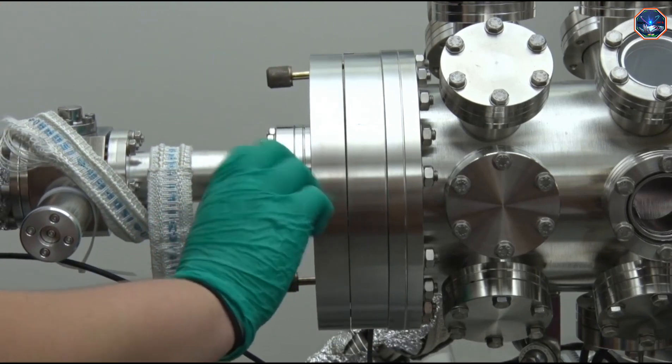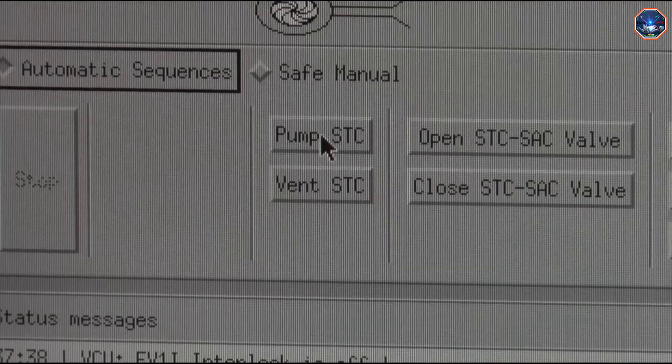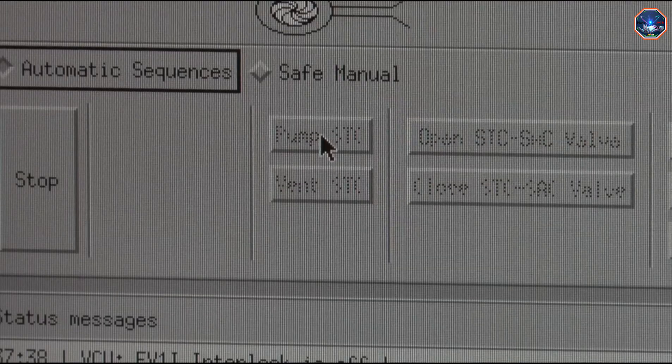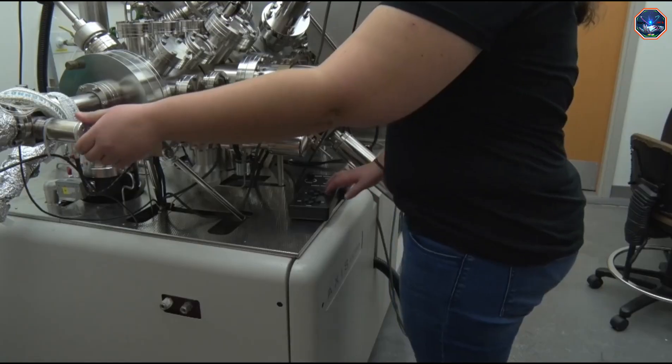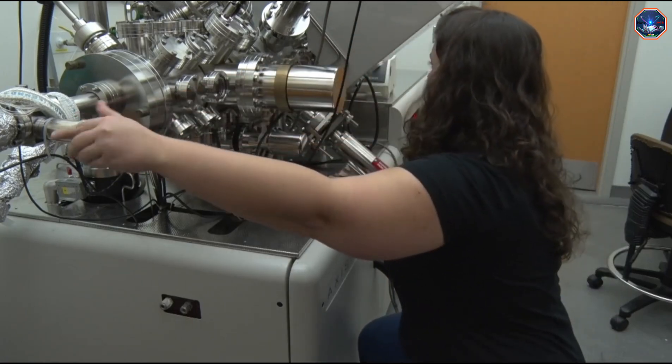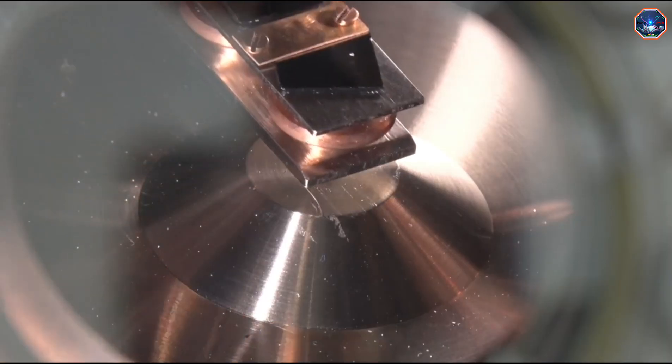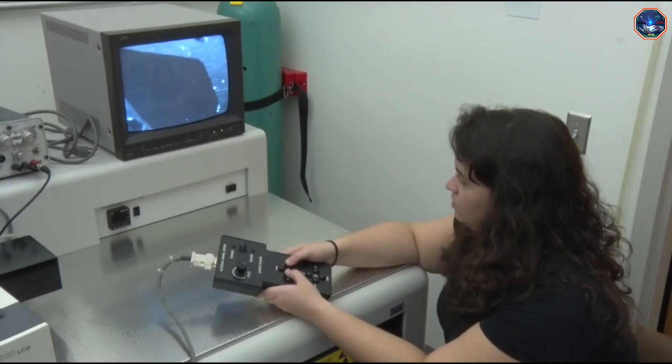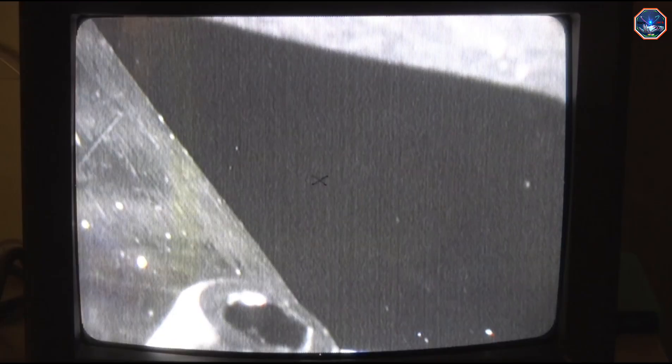Depending on the size of the chamber that needs to pump down, this can take anywhere from 20 minutes to 2 hours. Once the chamber has pumped down, I can move the samples into the analysis chamber, turn on the X-rays, and find the spot on my sample that I want to analyze.